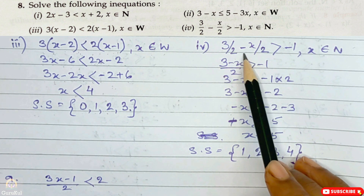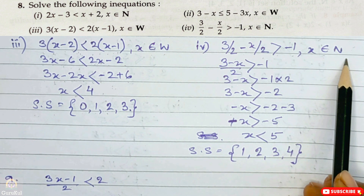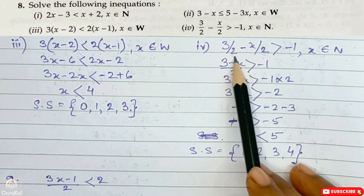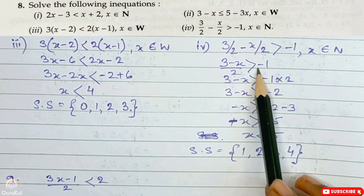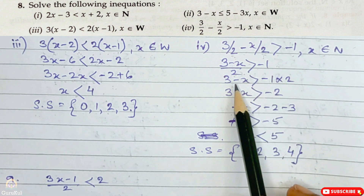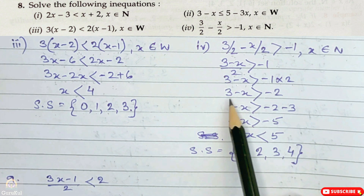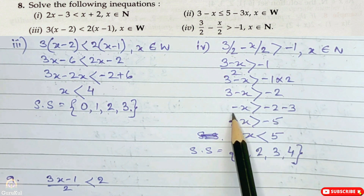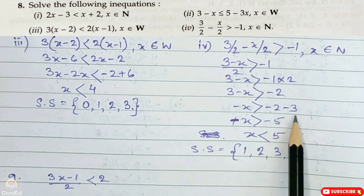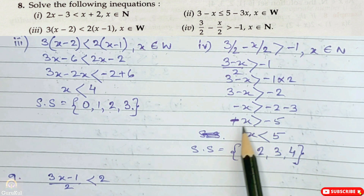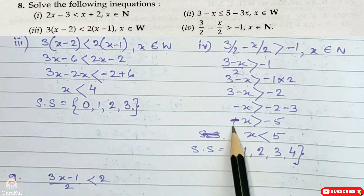Now the fourth one: it is 3 by 2 minus x by 2 greater than minus 1, where x belongs to natural number. Both denominators are 2, so LCM gives 3 minus x by 2 greater than minus 1. Cross multiply: 3 minus x greater than minus 1 into 2, so 3 minus x greater than minus 2. Minus x greater than minus 2 minus 3, so minus x greater than minus 5.